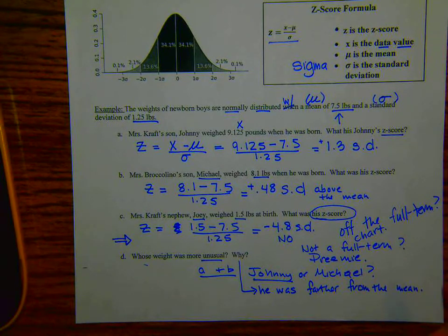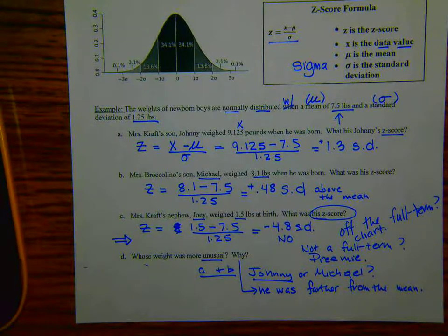And what you've learned right here is how to calculate a z-score. Z is x minus mu over sigma. And that tells you how far you are from the mean.